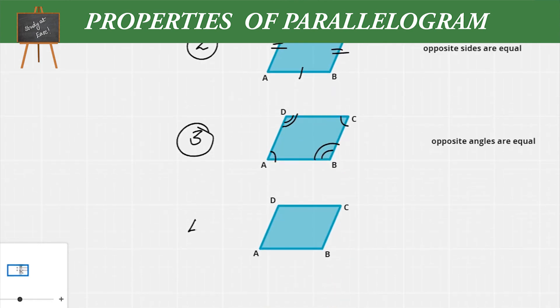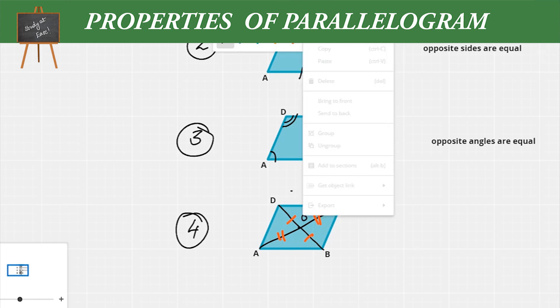Now let's look at the fourth property. In this parallelogram ABCD, AC and BD are the diagonals. They intersect at a point O. The property of the parallelogram says that the diagonals bisect each other. Bisect means nothing but dividing into equal parts. So AO is equal to OC and OB is equal to OD. The diagonals of a parallelogram bisect each other.